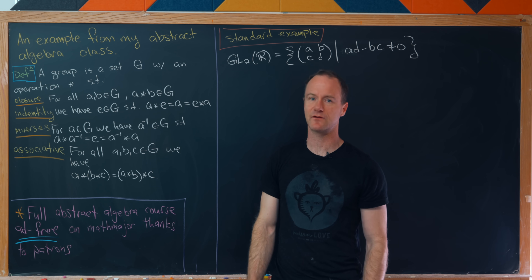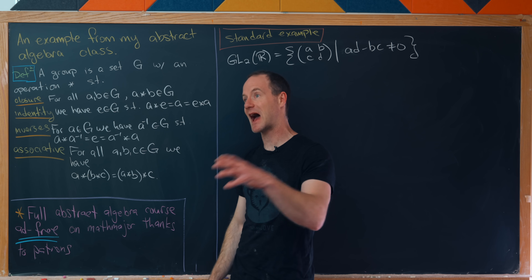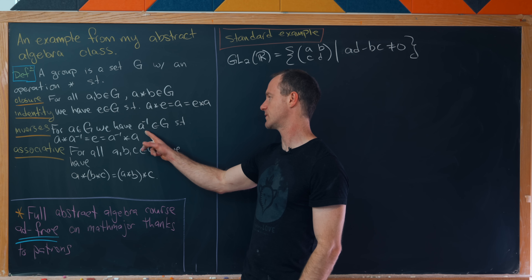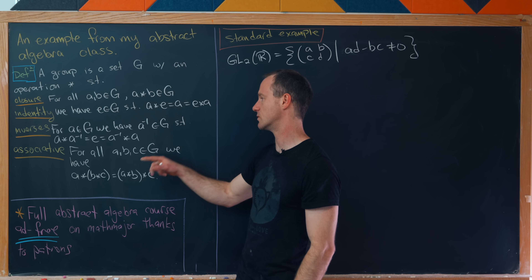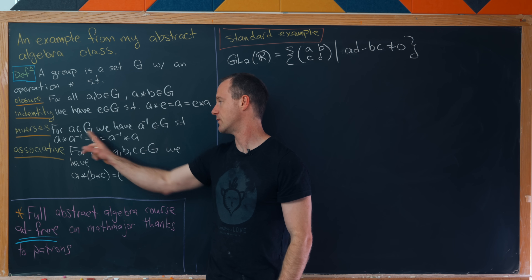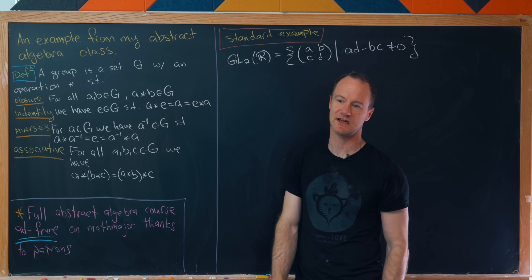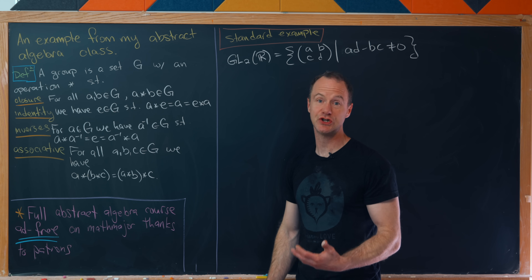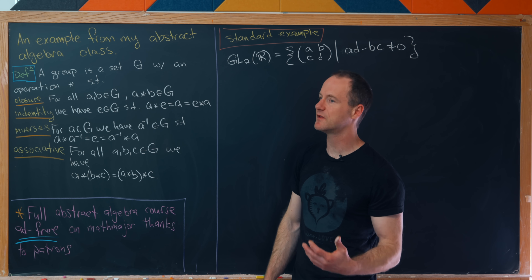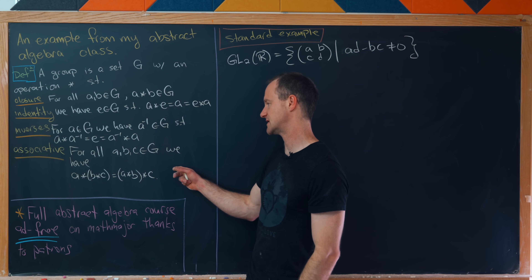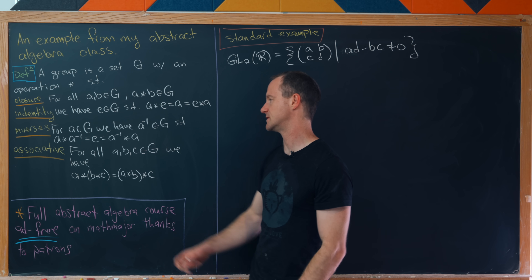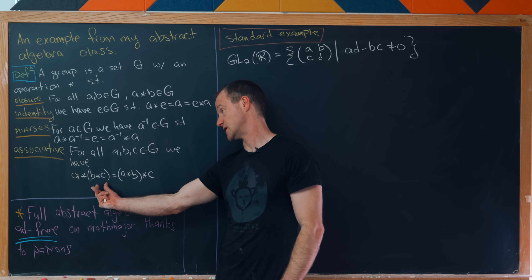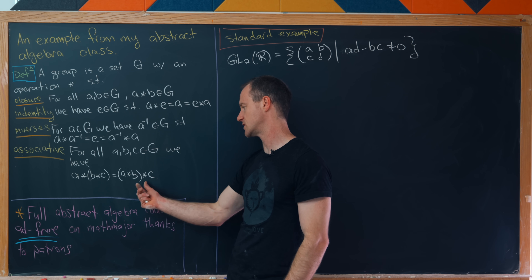Next we have inverses — that's like a path back to the identity. For all elements of the group, there is something called A inverse inside the group, so that when you combine A with A inverse in either order, you get back to the identity. Think of adding three and negative three, or multiplying two times one half. And then finally there's an associativity axiom: if you have three elements A, B, C, then A star (B star C) is the same as (A star B) star C.